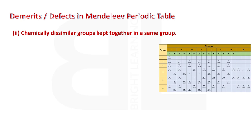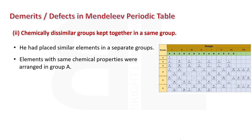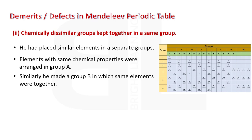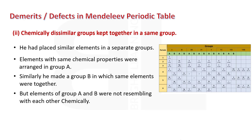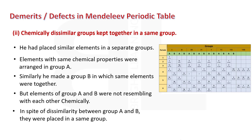Another defect is that he placed chemically dissimilar elements into the same group. Elements with the same chemical properties were arranged in group A, and similarly he made group B for elements with similar properties. But elements of group A and group B did not resemble each other chemically. In spite of this dissimilarity between group A and B, they were placed in the same group.